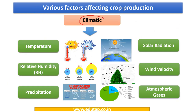The climatic factors affecting crop production are temperature, relative humidity, precipitation, solar radiation, wind velocity, and atmospheric gases. Temperature affects plant growth from the germination stage through development, leaf expansion, and the flowering process. For our examination, an important value to memorize is that most agricultural plants show maximum growth within a temperature range of 15°C to 40°C. For each crop, there is an optimum temperature — kindly memorize the optimum temperature for important crops.